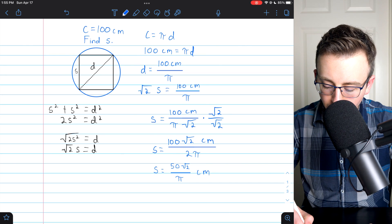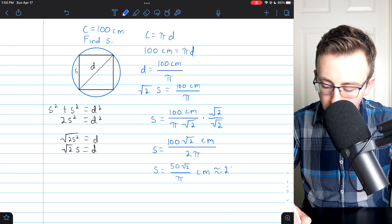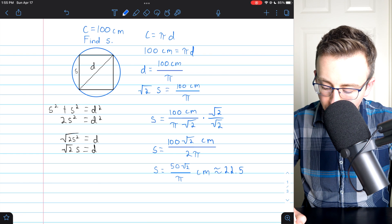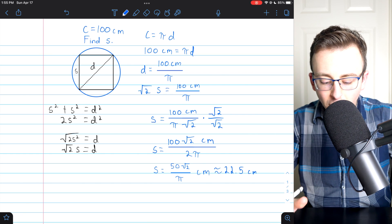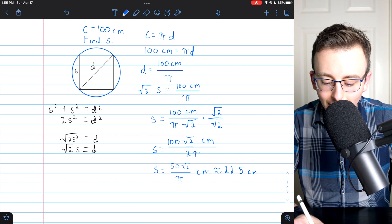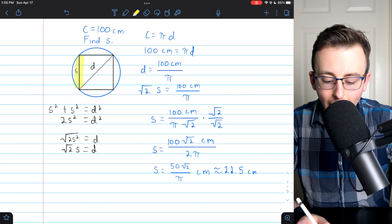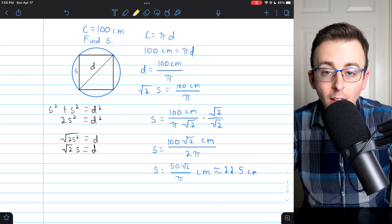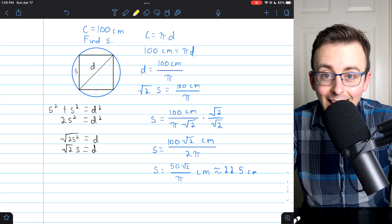And if you're into decimal approximations, this is about 22.5 centimeters. So that's how you find the side length of an inscribed square, given the circumference of the circle that's containing the square.